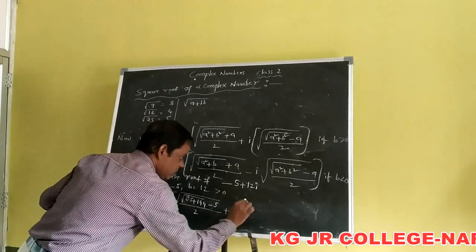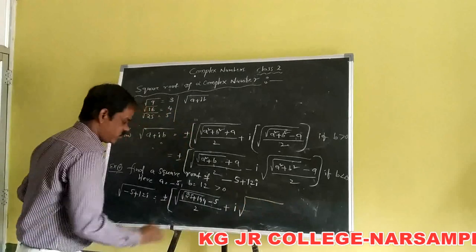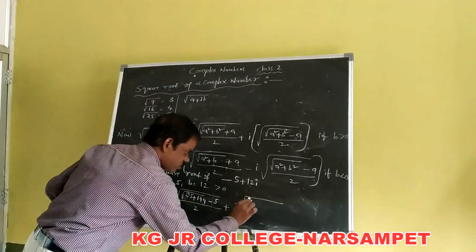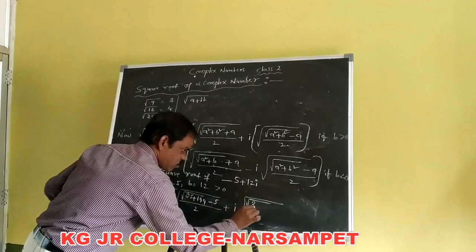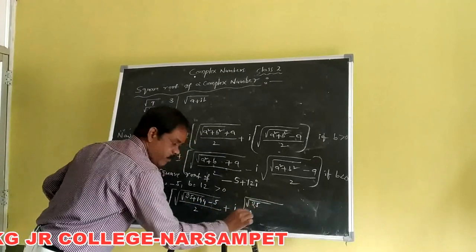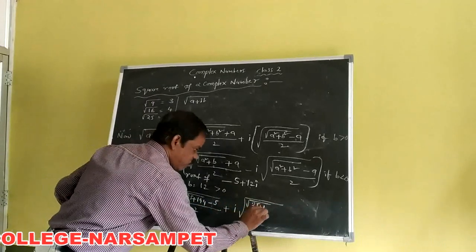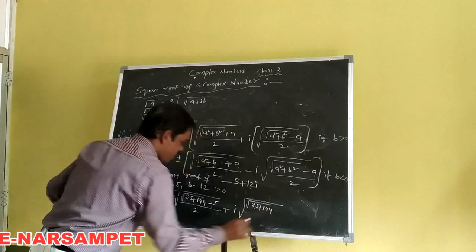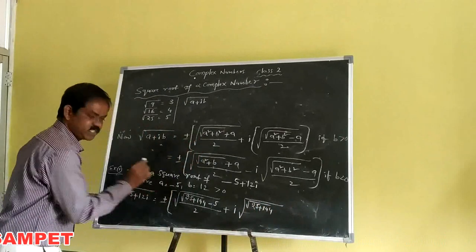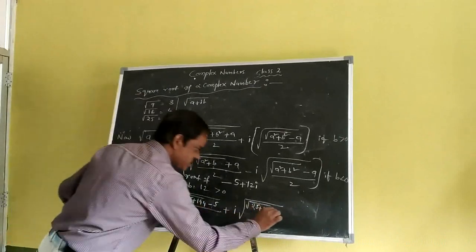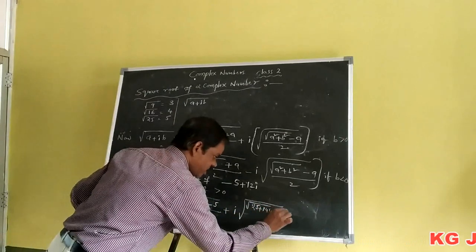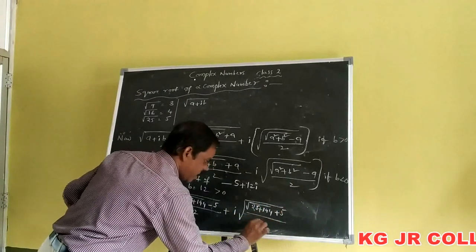Plus i into square root of (square root of 25 plus 144, minus 5) divided by 2.